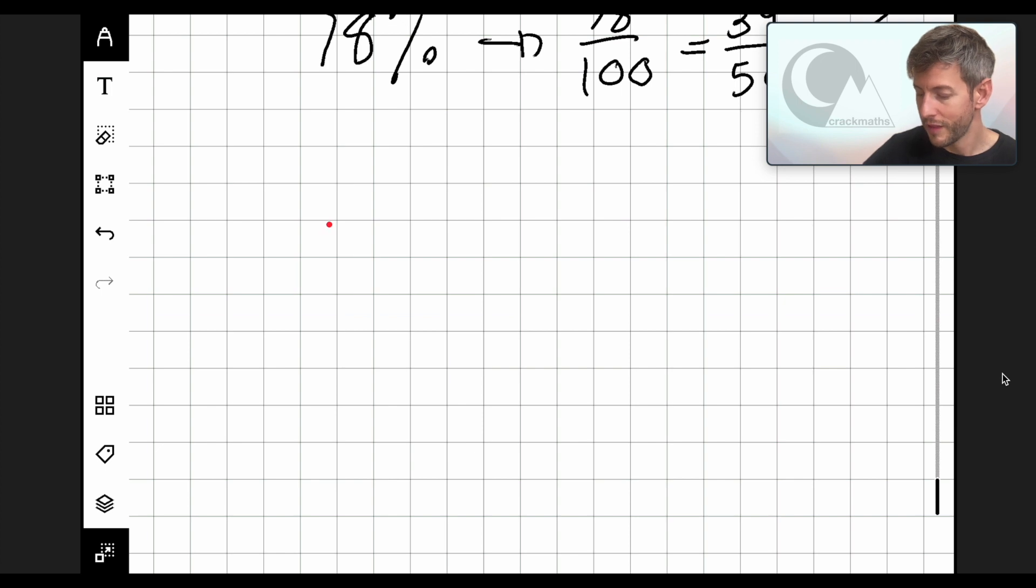So 78% in its simplest form as a fraction is 39 out of 50. Let's try 55%. So 55%, remember straight away, it's going to be 55 out of 100.